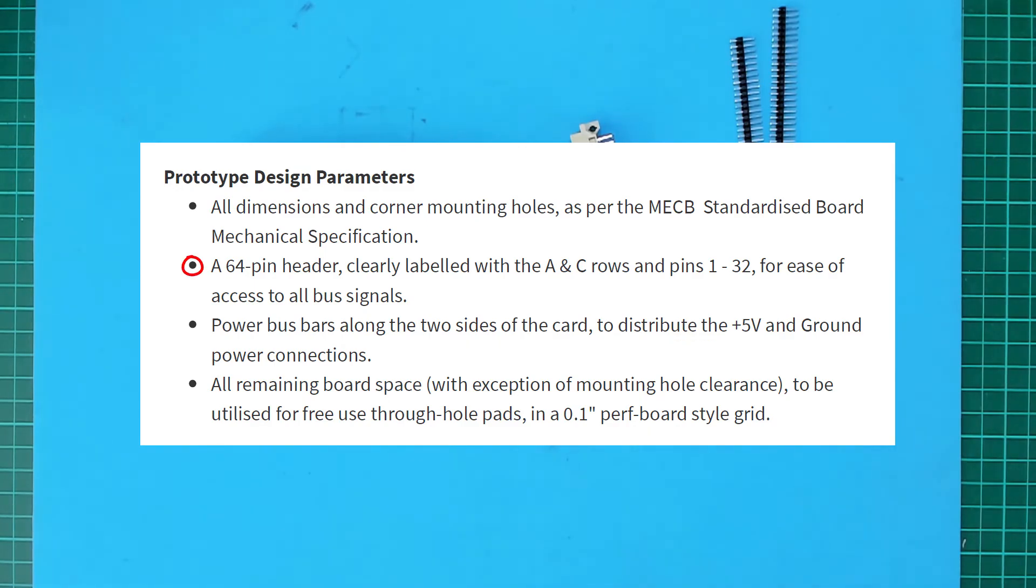A 64 pin header clearly labeled with the A and C rows and pins 1 to 32 for ease of access to all bus signals. Power bus bars along the two sides of the card to distribute the plus 5 volts and ground power connections.